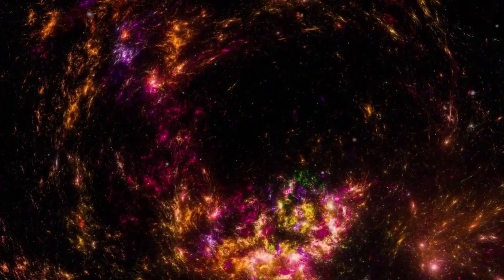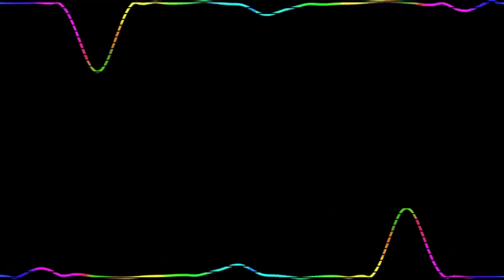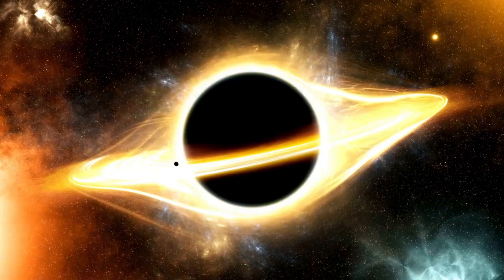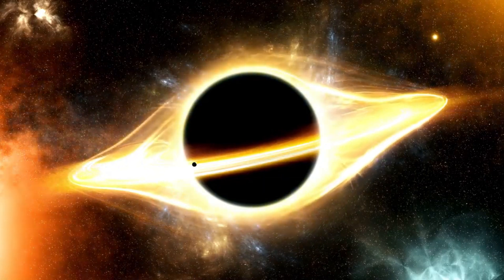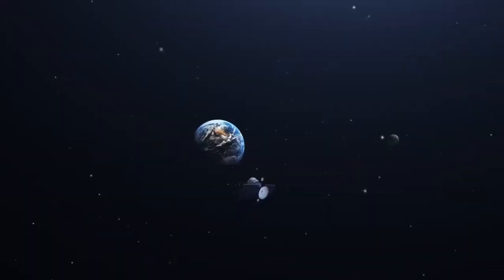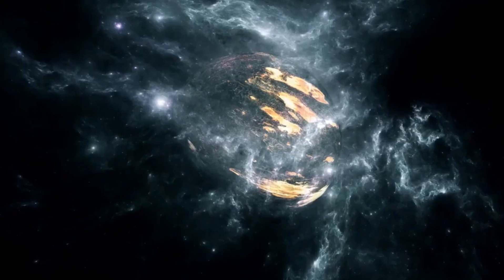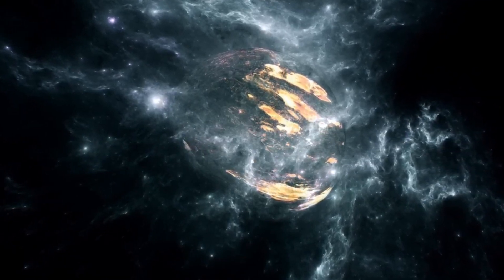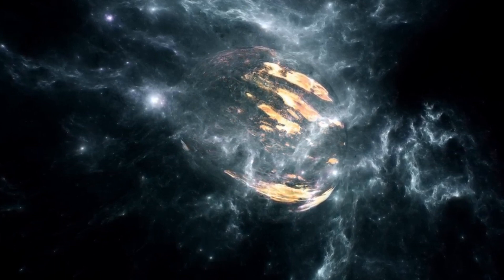Betelgeuse is a red supergiant, a type of star that is in the final stages of its life. These massive stars burn through their nuclear fuel at an incredible rate, fusing lighter elements into heavier ones in their cores. Over time, the core of a red supergiant becomes layered like an onion, with shells of hydrogen, helium, carbon, oxygen, and other elements surrounding a dense core of iron. When the core can no longer support the star's immense weight, it collapses under its own gravity, triggering a supernova explosion. This explosion is one of the most energetic events in the universe, releasing an enormous amount of light and radiation that can outshine entire galaxies for a brief period.